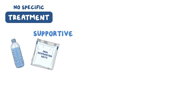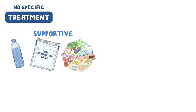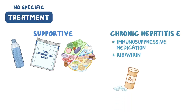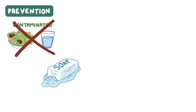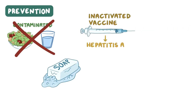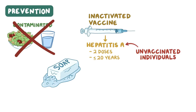There is no specific treatment for acute hepatitis A and E. Supportive treatment, like replacing lost fluids and electrolytes as well as dietary measures, are usually taken. Chronic hepatitis E can be treated by reducing immunosuppressive medication doses or with ribavirin and pegylated interferon. Prevention is done by avoiding potentially contaminated food or water and with regular hand-washing. There is also an inactivated vaccine against hepatitis A, given in two doses, that protects against hepatitis A for up to 20 years. If unvaccinated individuals have been exposed to hepatitis A, immune serum globulin can be given to prevent illness.